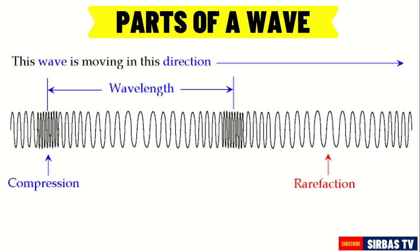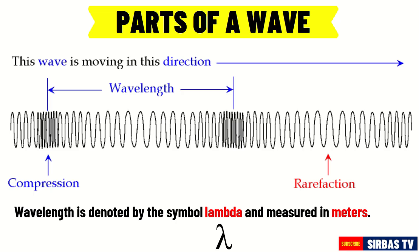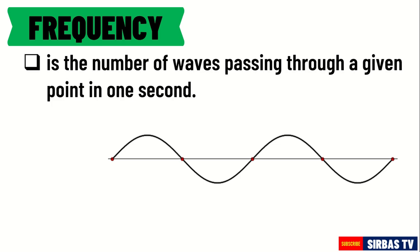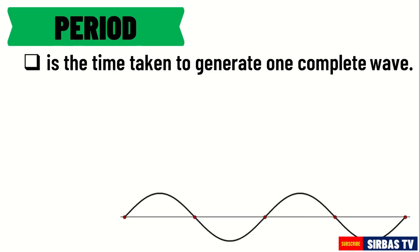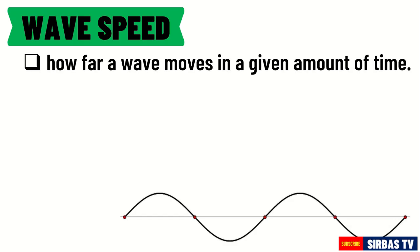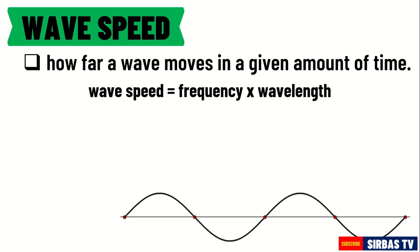Frequency is the number of waves passing through a given point in one second, measured in units called hertz. Looking at a wave that propagated in a span of one second with two wave cycles — where one wave cycle equals one crest and one trough — the frequency is two hertz. The period is the time taken to generate one complete wave, or the time for any given point on the wave to move a distance of one wavelength; its unit is seconds. Wave speed is how far a wave moves in a given amount of time, and is equal to frequency multiplied by wavelength.